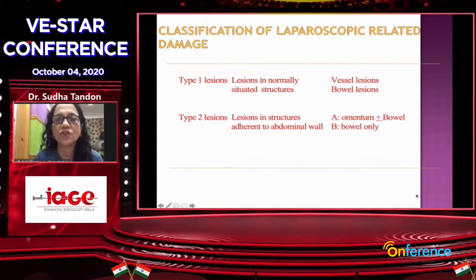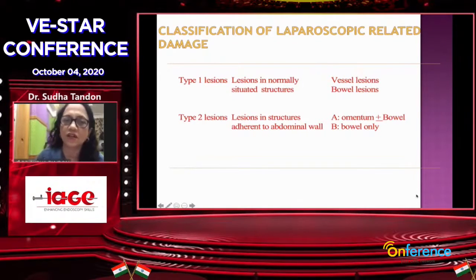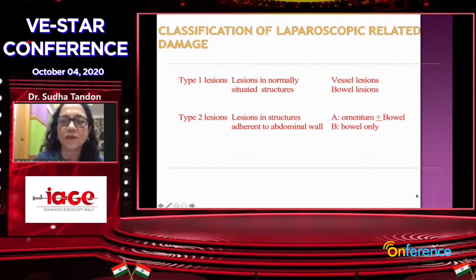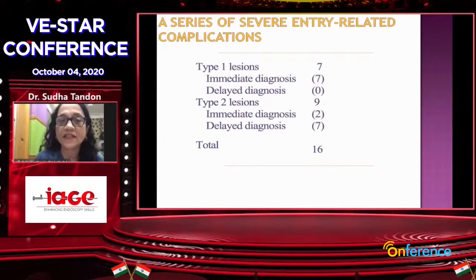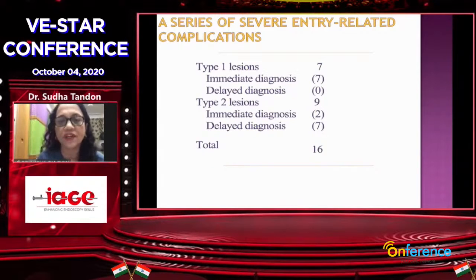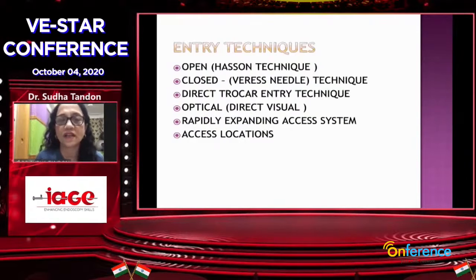These have been very nicely divided into Type 1 lesions — which are lesions with the bowel and vessel located in the normal situation — and Type 2, which are lesions in structures adherent to the abdominal wall, whether it is omentum, bowel, or bowel only. They studied 16 entry-related complications: Type 1 lesions were about 7, and the diagnosis is immediate. The Type 2 lesions numbered 9, with delayed diagnosis in 7 of them, which can be really very fatal because you diagnose them on day 2 or day 3.